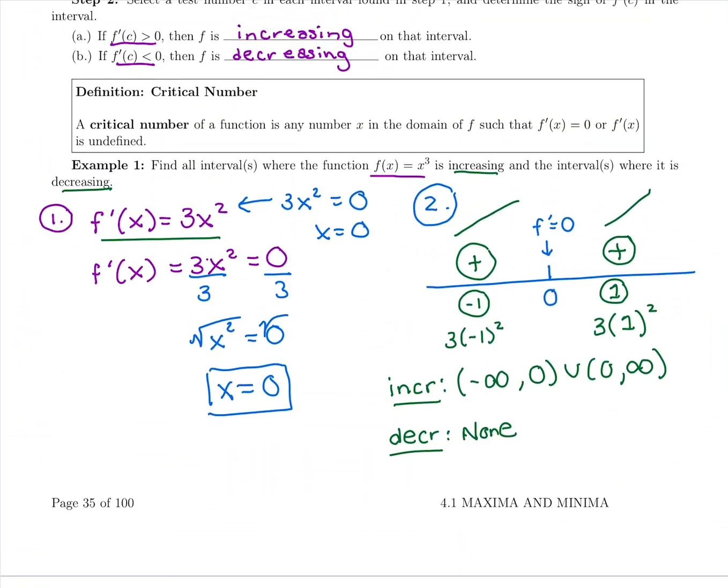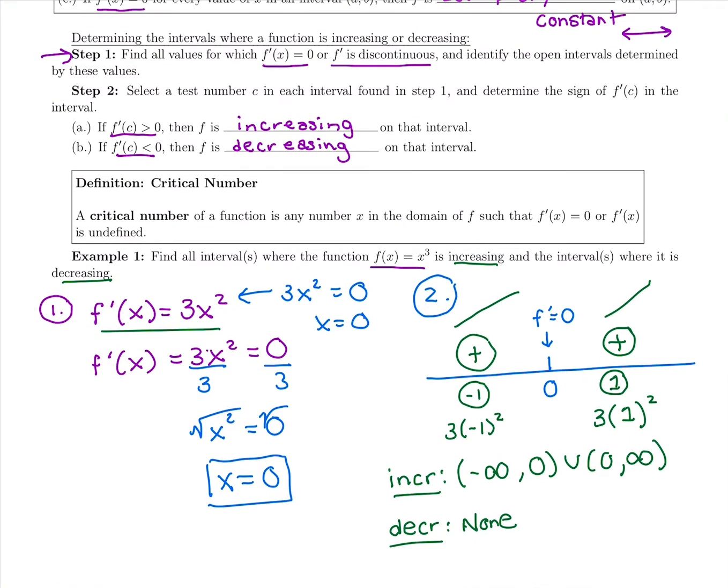So flipping back to this page here, a critical number of a function is any number in the domain of f that makes the derivative 0 or makes it undefined. So it has to be in the domain of the original function and make the derivative 0 or undefined.